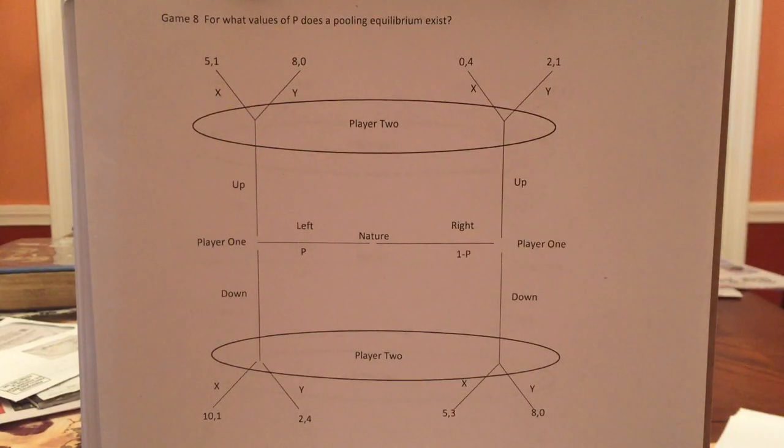But let's do this game. You can see this question is phrased slightly different. It's not asking you to find the equilibria. It's asking you to find for what values of P does an equilibrium exist. So now nature moves left with probability P, right with probability one minus P.